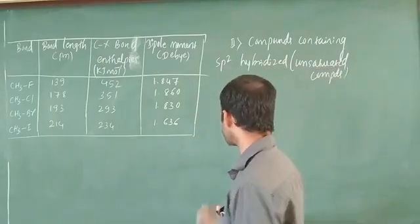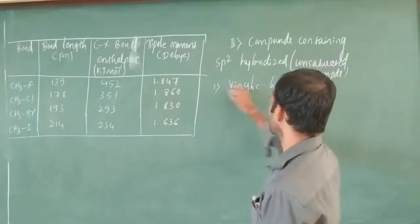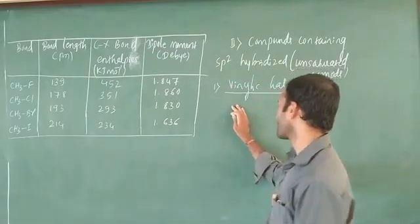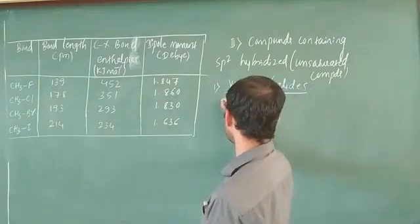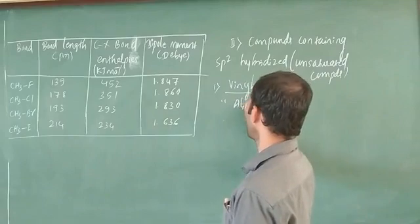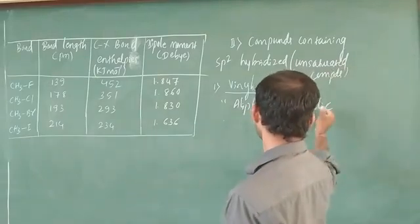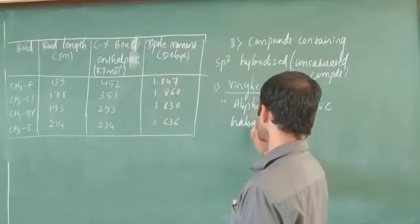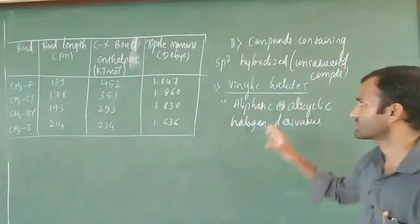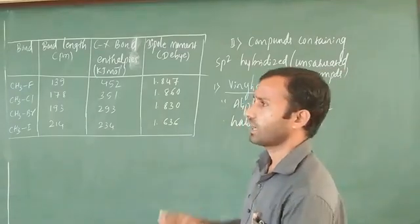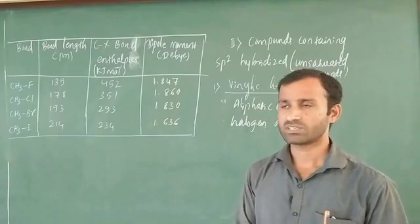The first type of unsaturated halides is vinylic halides. Vinylic halides are unsaturated compounds of aliphatic or alicyclic halogen derivatives. In this case, the halogen atom is directly attached to an sp2 hybridized carbon atom, which is what makes it unsaturated.